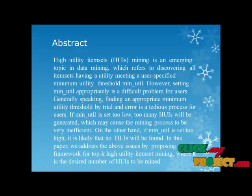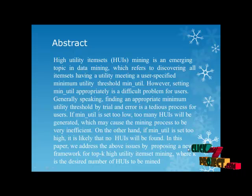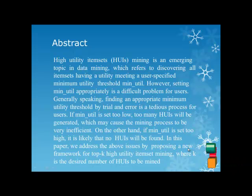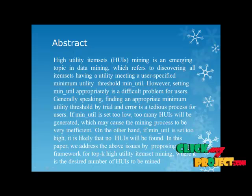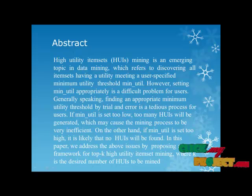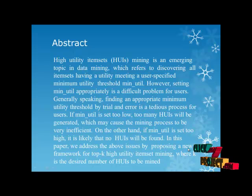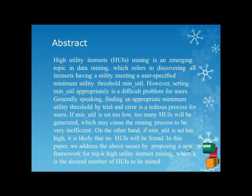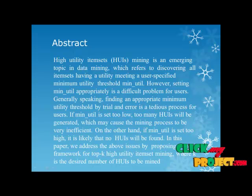However, setting a minimum utility appropriately is a difficult problem for users. Generally, finding an appropriate minimum utility threshold by trial and error is a traditional process. If the minimum utility threshold is set too low, too many high utility item sets will be generated, making the mining process very inefficient. On the other hand, if it is set too high, it is likely that no high utility item sets will be found.